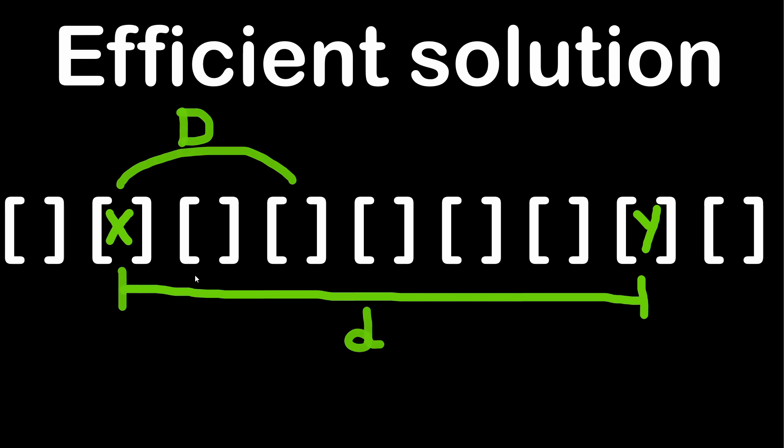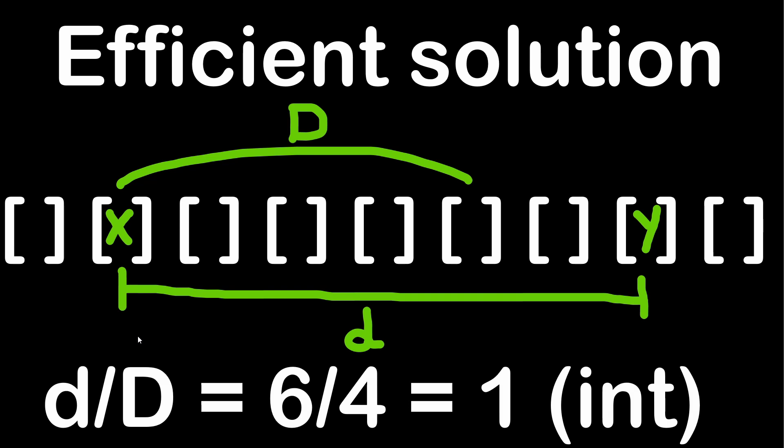However, there's a trap to consider with this method, and it's better shown in numbers. Let's take d, the distance to cover, equal to 6, and capital D equal to 4.